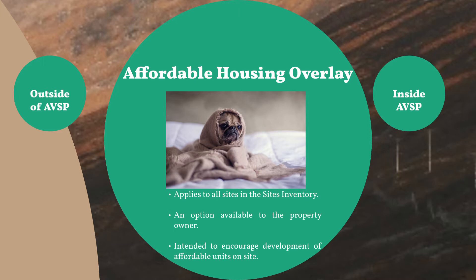If a property owner chooses to use the AHO, their project could be approved through an over-the-counter process known as Ministerial, rather than review and approval by the Planning Commission or the City Council, which is a discretionary process. Utilizing the AHO also allows for increased density at a range of 20 to 25 dwelling units per acre, all in exchange for constructing 20% of the units as very low or low income.